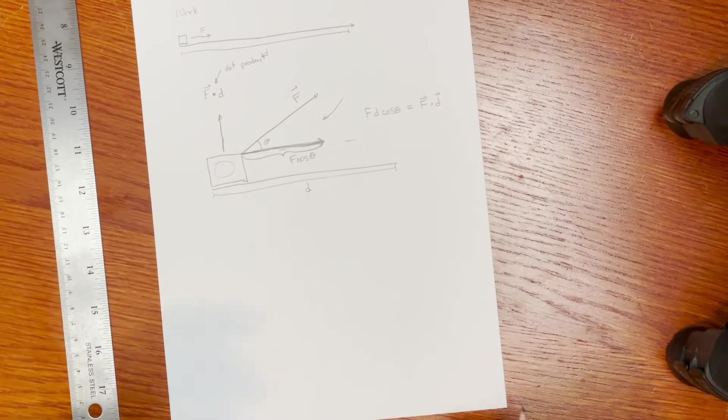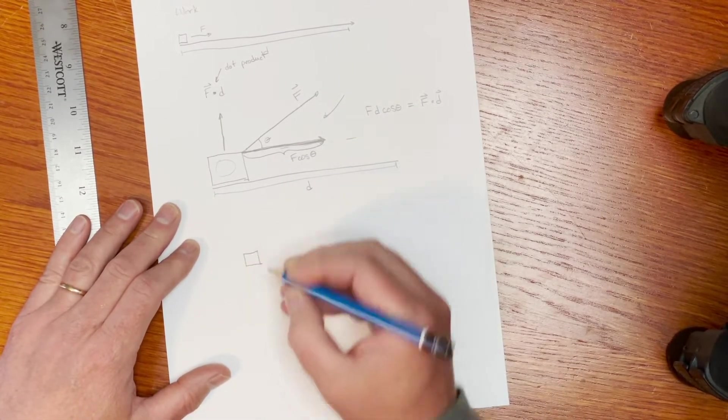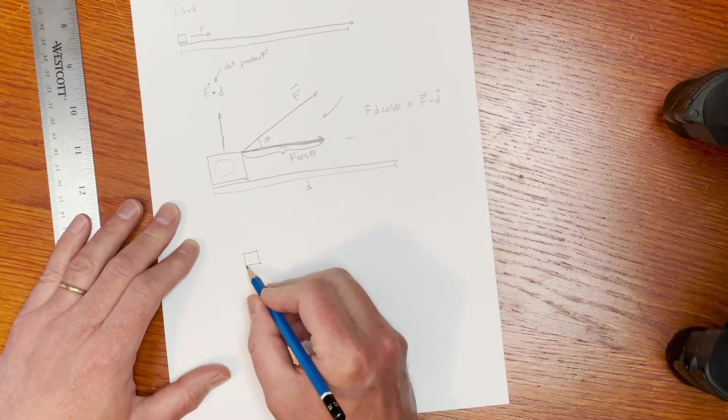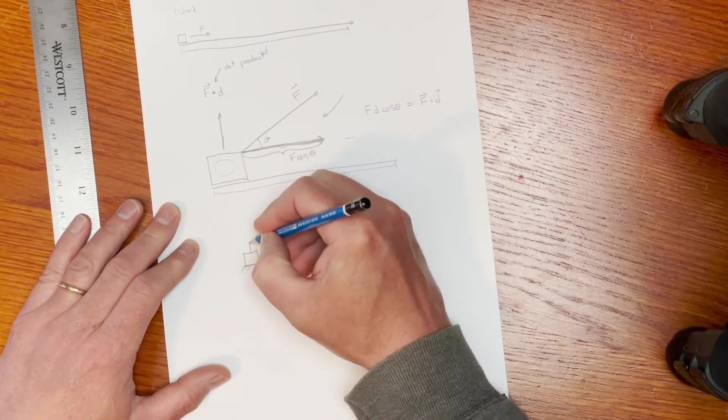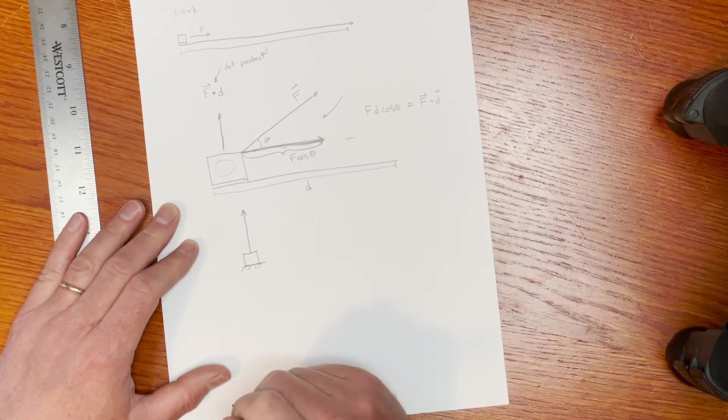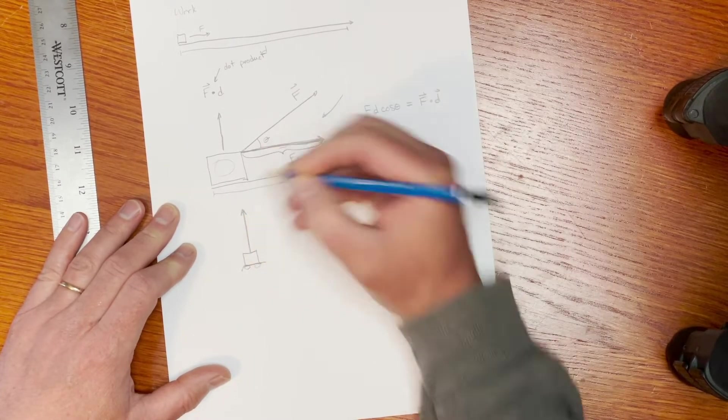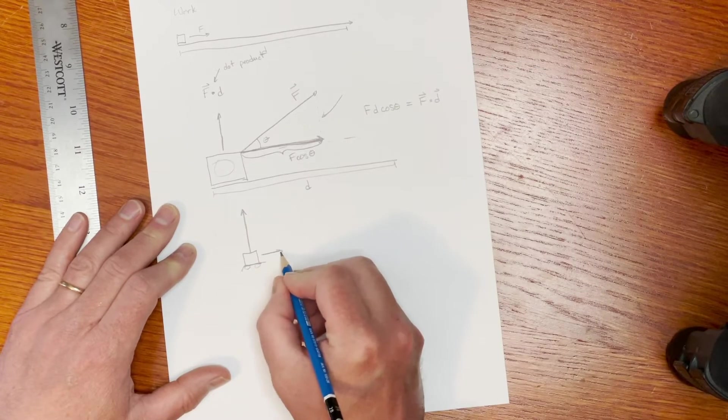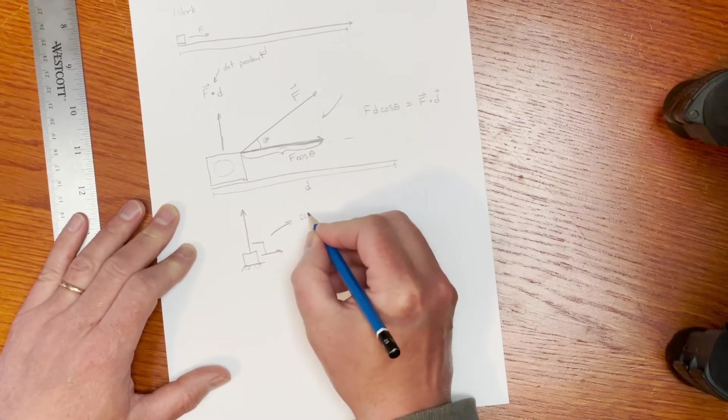So in the case of work direction matters. You can think about it in the limit. If I've got an object that's on a track here and it can't lift up, and I'm pulling straight up, that's not going to cause it to move left or right. And the angle between the vector that I'm pulling and the direction of motion is 90 degrees.